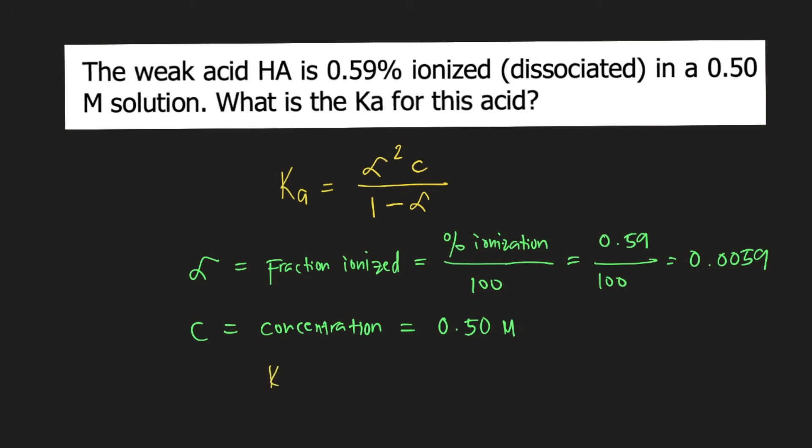Solving for Ka, we have 0.0059 squared times 0.50 divided by 1 minus 0.0059, and this equals 1.75 times 10 raised to negative 5.